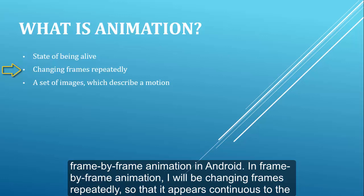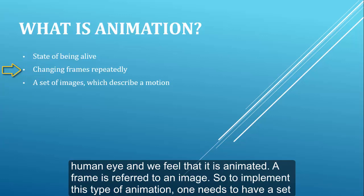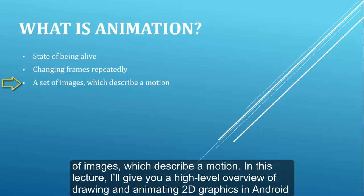Frames are changed repeatedly so that it appears continuous to the human eye and we feel that it is animated. A frame is referred to as an image, so to implement this type of animation one needs to have a set of images which describe a motion. In this lecture I will give you a high-level overview of drawing and animating 2D graphics in Android using canvas.